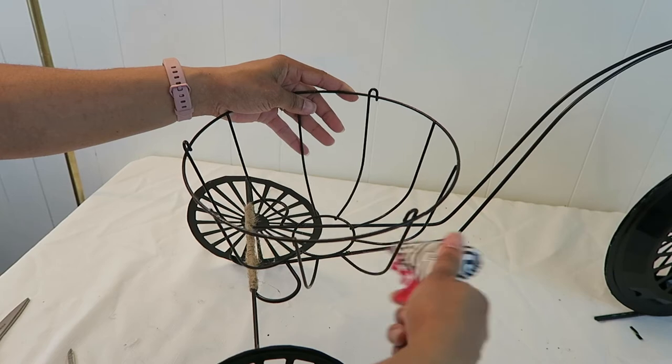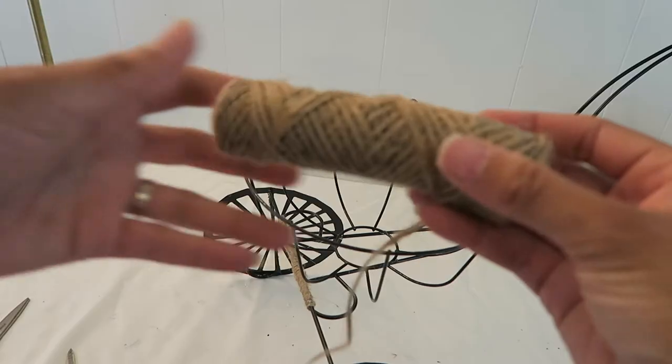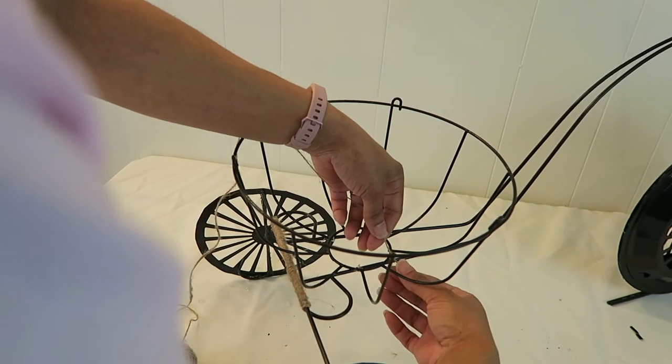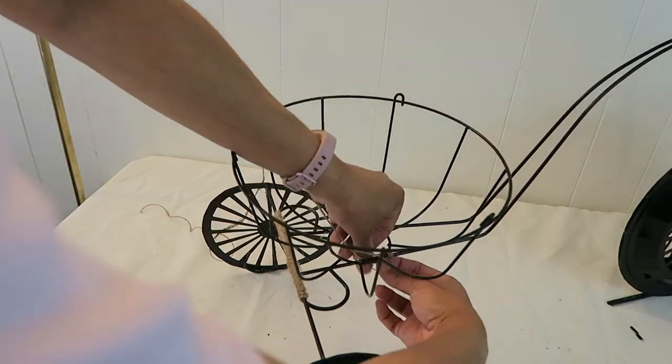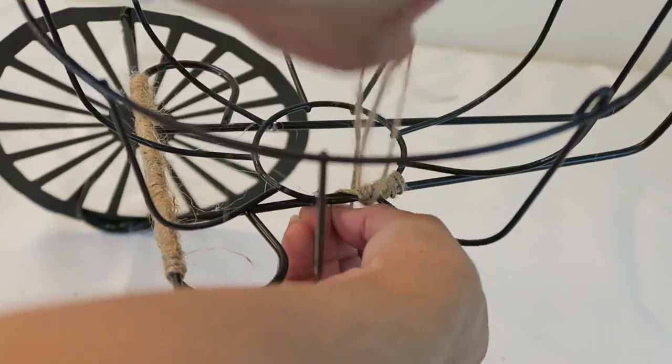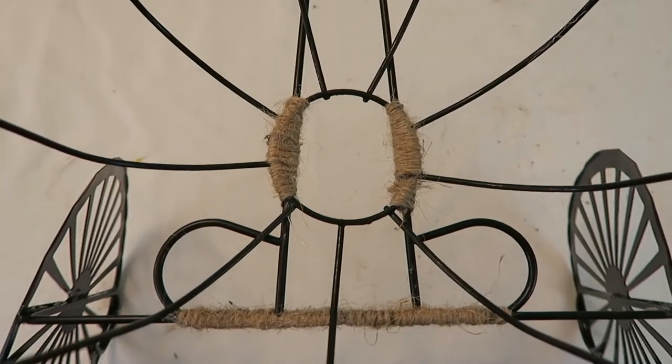So I placed the wire basket where I wanted it to go and I glued it on. And once again reinforced with the twine. And this is how that looks.